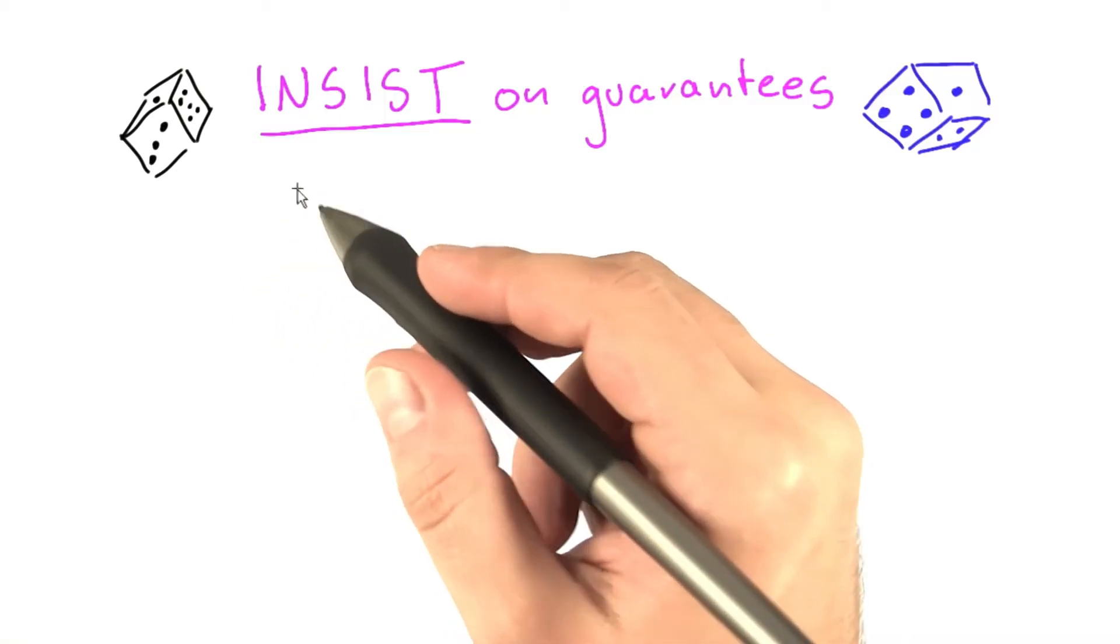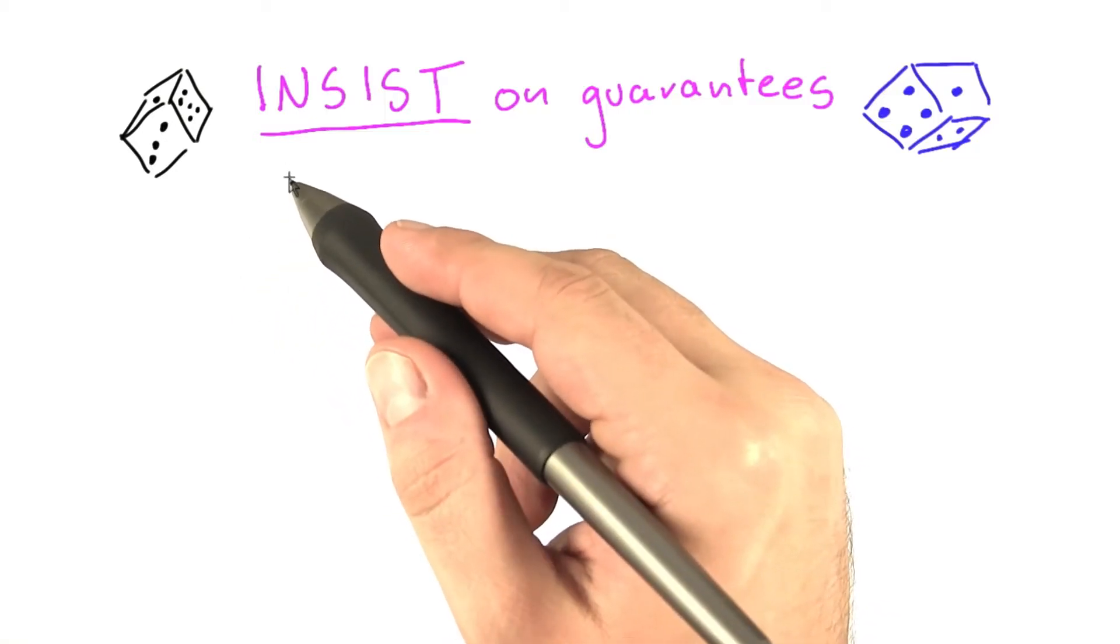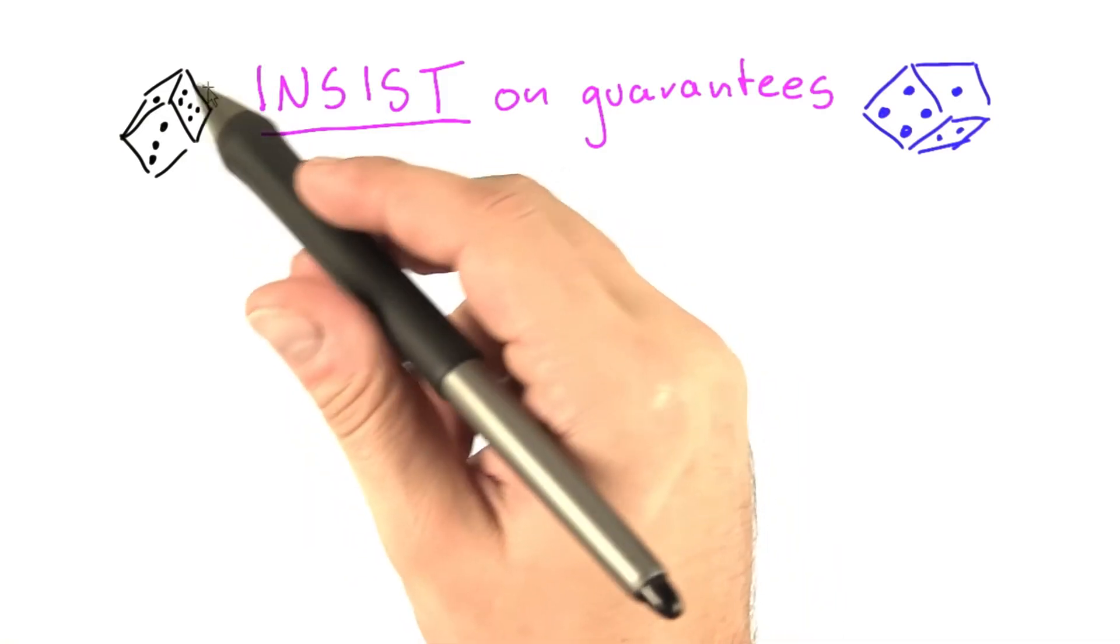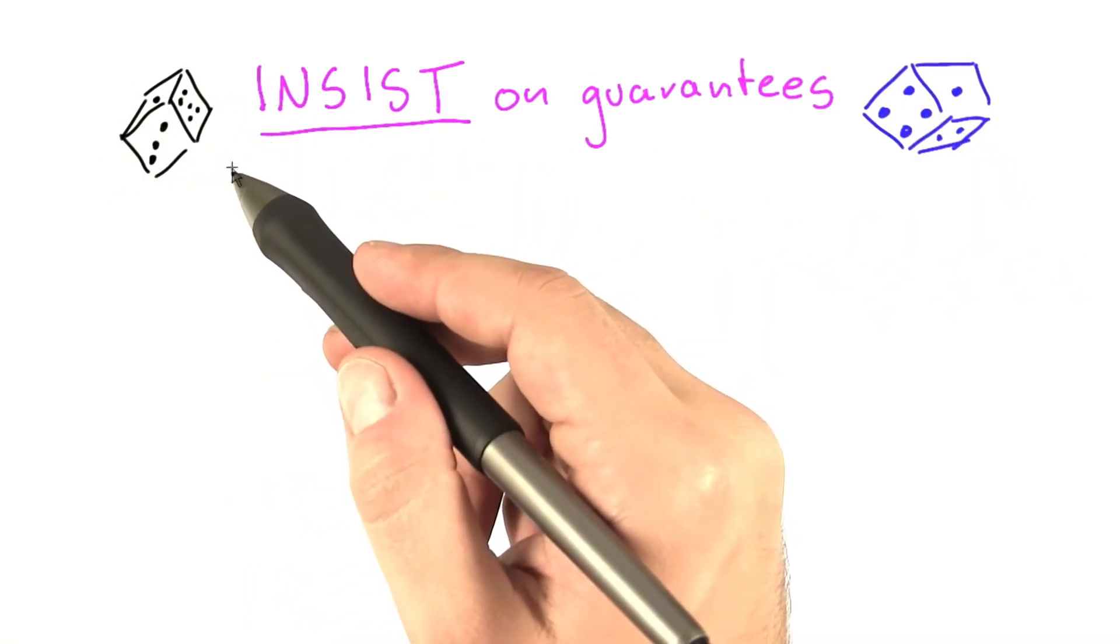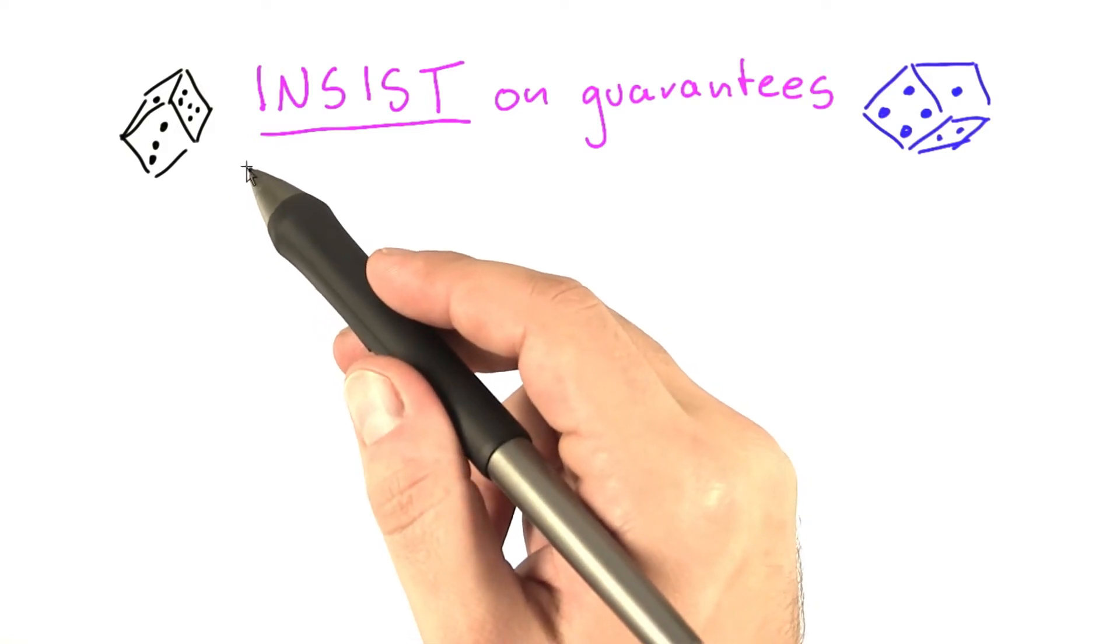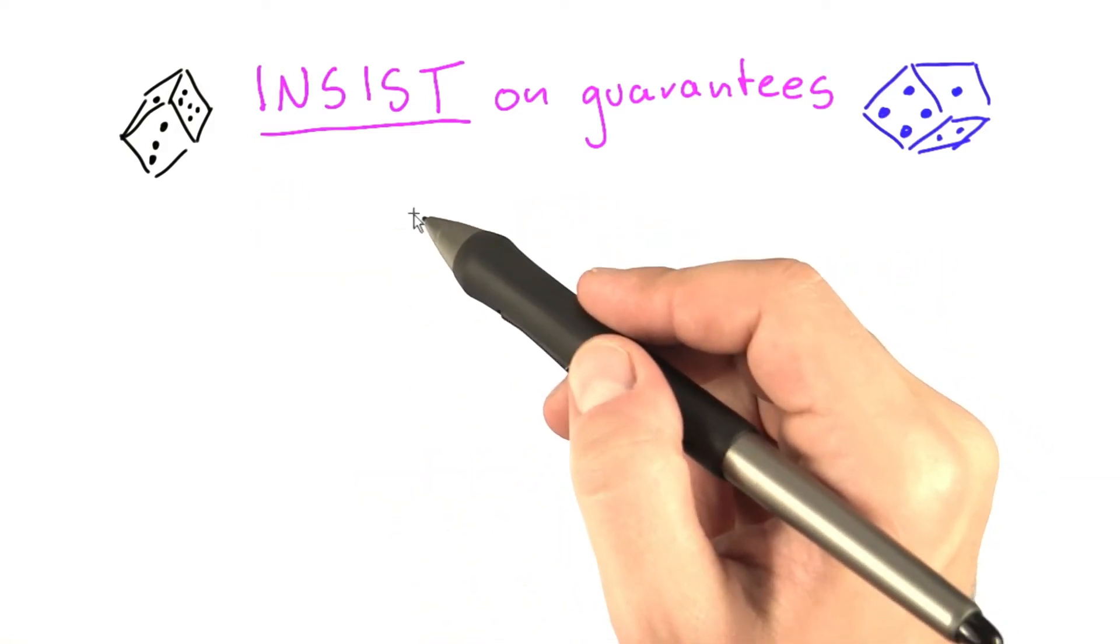Now before we dive deeper into the algorithms, I want to make one important point. When you use randomness in computation, there's sometimes a danger of taking the poking around that I mentioned in my title for this unit a bit too literally.